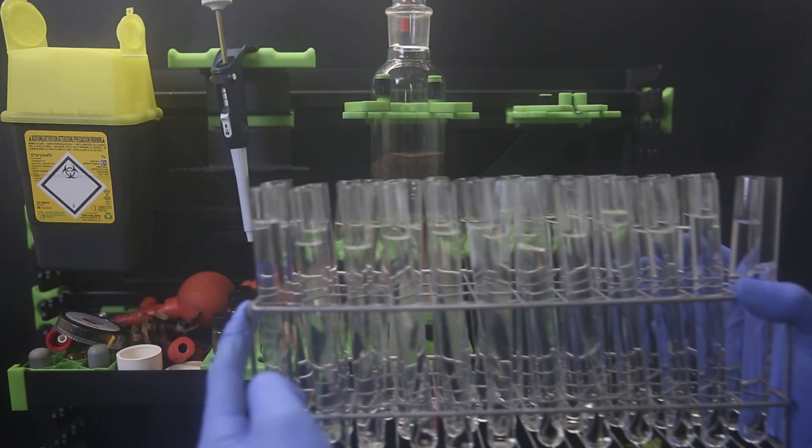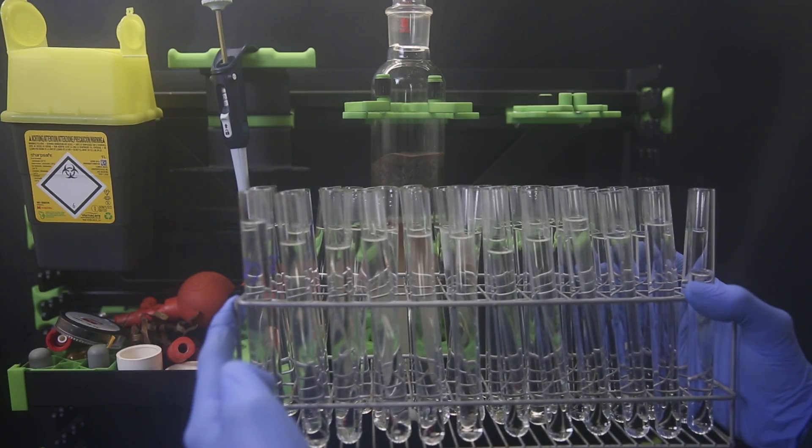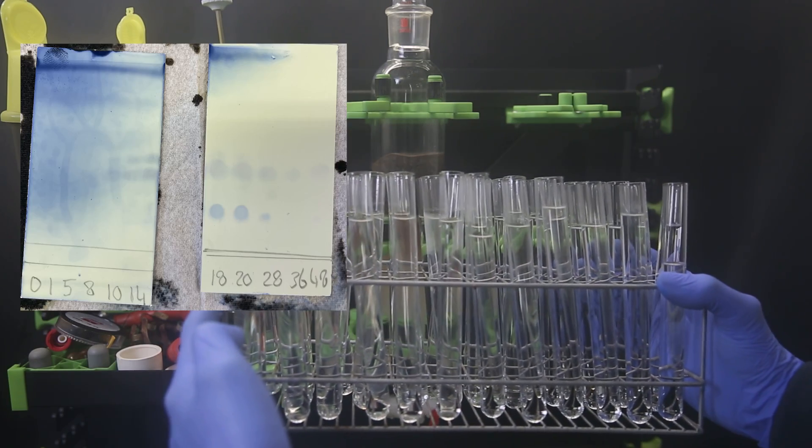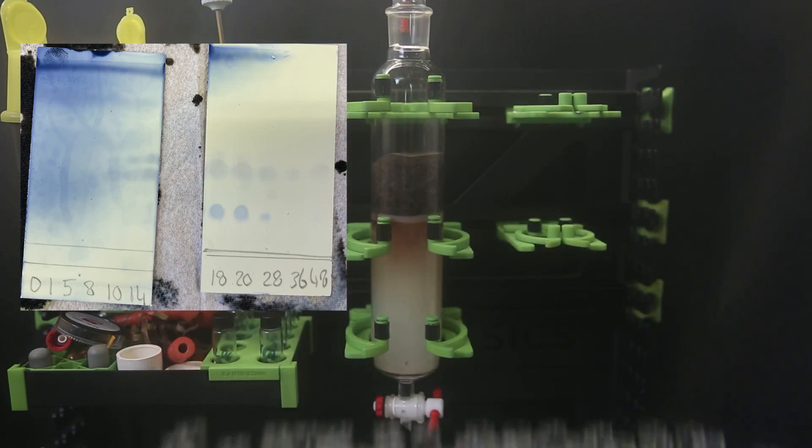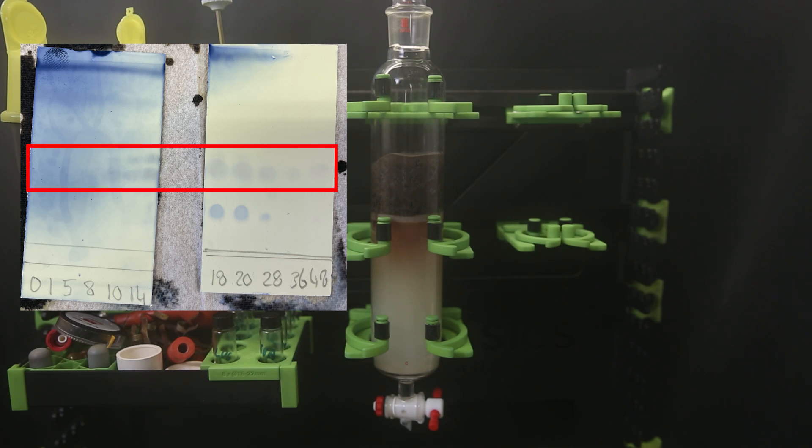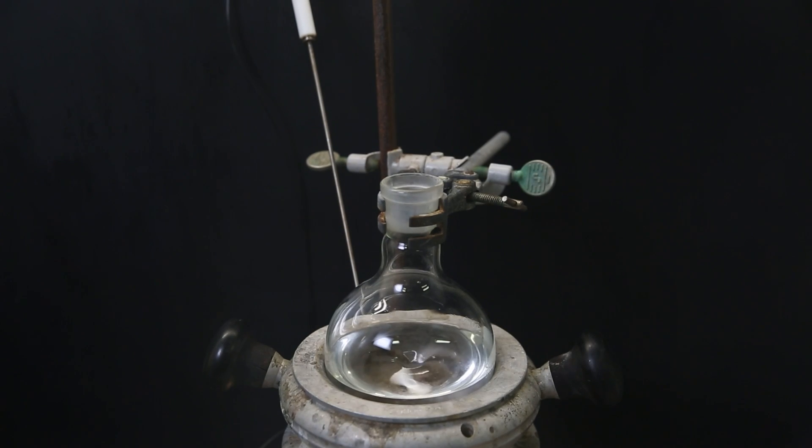When that's done, I have collected about 48 fractions plus one bigger fraction at the start. Checking some of these fractions on TLC, it looks like the middle spot is actually two spots close together, and it starts to be visible around fraction 10. So I will just take fractions 10 to 48, combine them, and evaporate them down.